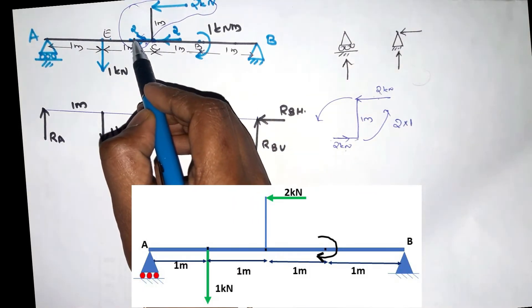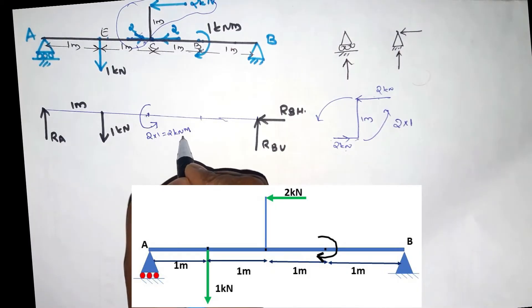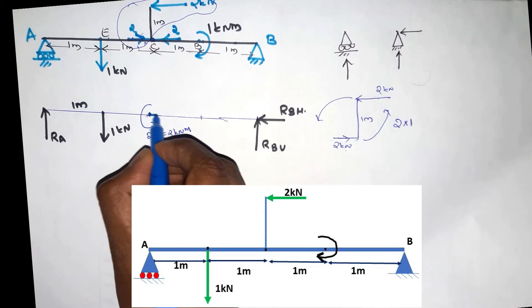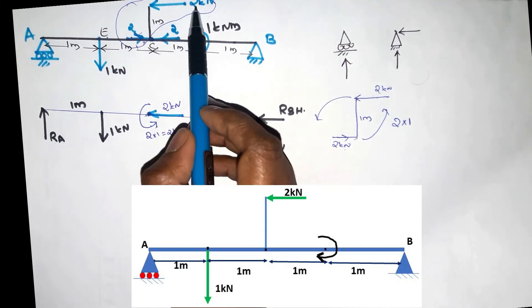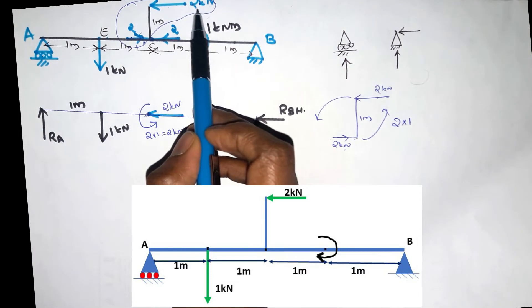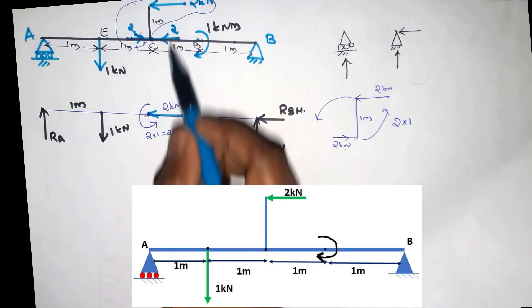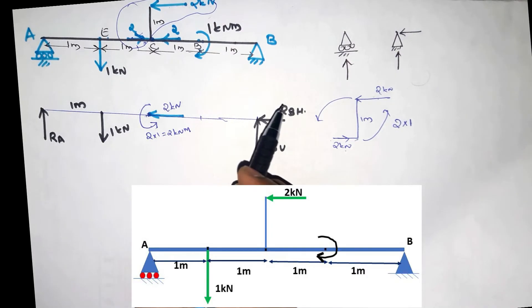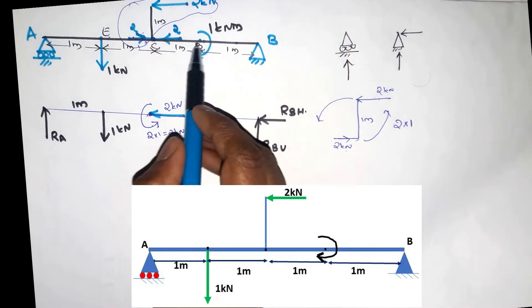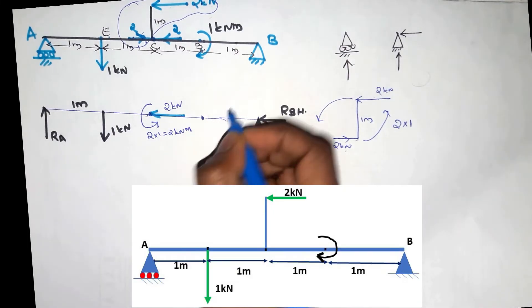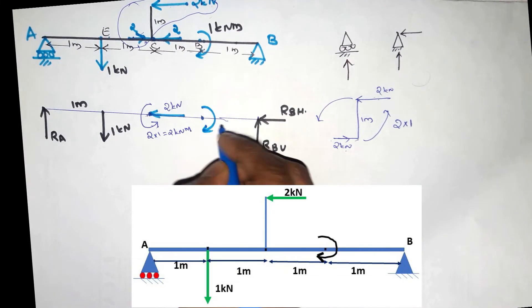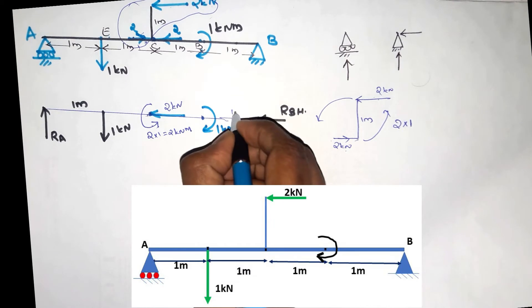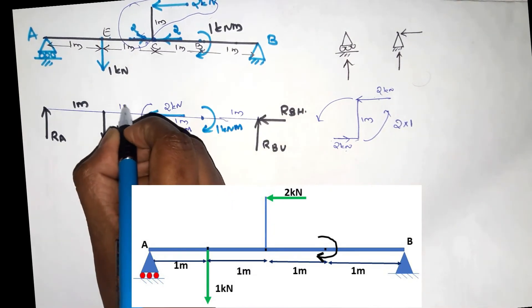2×1 is equal to 2kNm. We will consider this couple on 4 sides — this is the net effect, this is the moment at 2kNm. We mark that as 2kNm. The horizontal force creates a 1kNm moment. We mark the value as 1kNm. The distance is 1m.